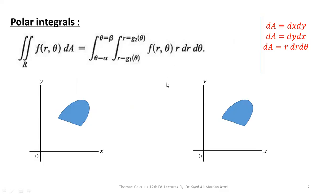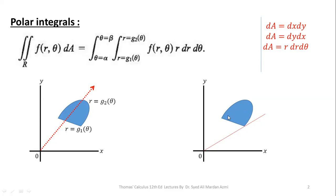In order to calculate the limits of r, we pass an arrow starting from the origin and crossing the region. The boundary through which the arrow enters our region gives the lower limit, and the boundary through which the arrow exits gives the upper limit. Similarly, to calculate the limits of theta, our region starts at one point in the counterclockwise direction and ends at another. We calculate the starting angle and ending angle of this region. So if the starting angle is alpha and the ending angle is beta, then the limits of theta are alpha to beta.